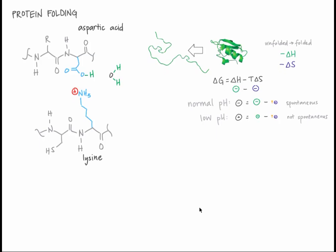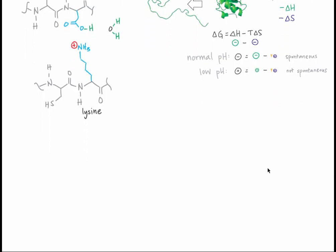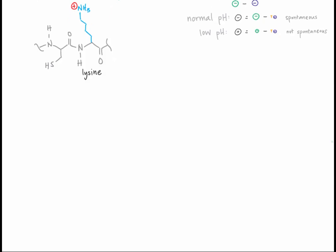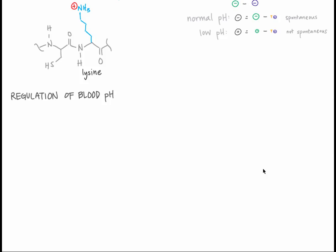While the pH of the stomach is very low, the pH of the rest of the body is tightly maintained between 7.3 and 7.4, slightly more basic than pure water. Even in the presence of external influences that have the effect of increasing or decreasing pH, the body adjusts to remain at homeostasis. This occurs at three levels: chemical buffers, respiratory control, and renal control.